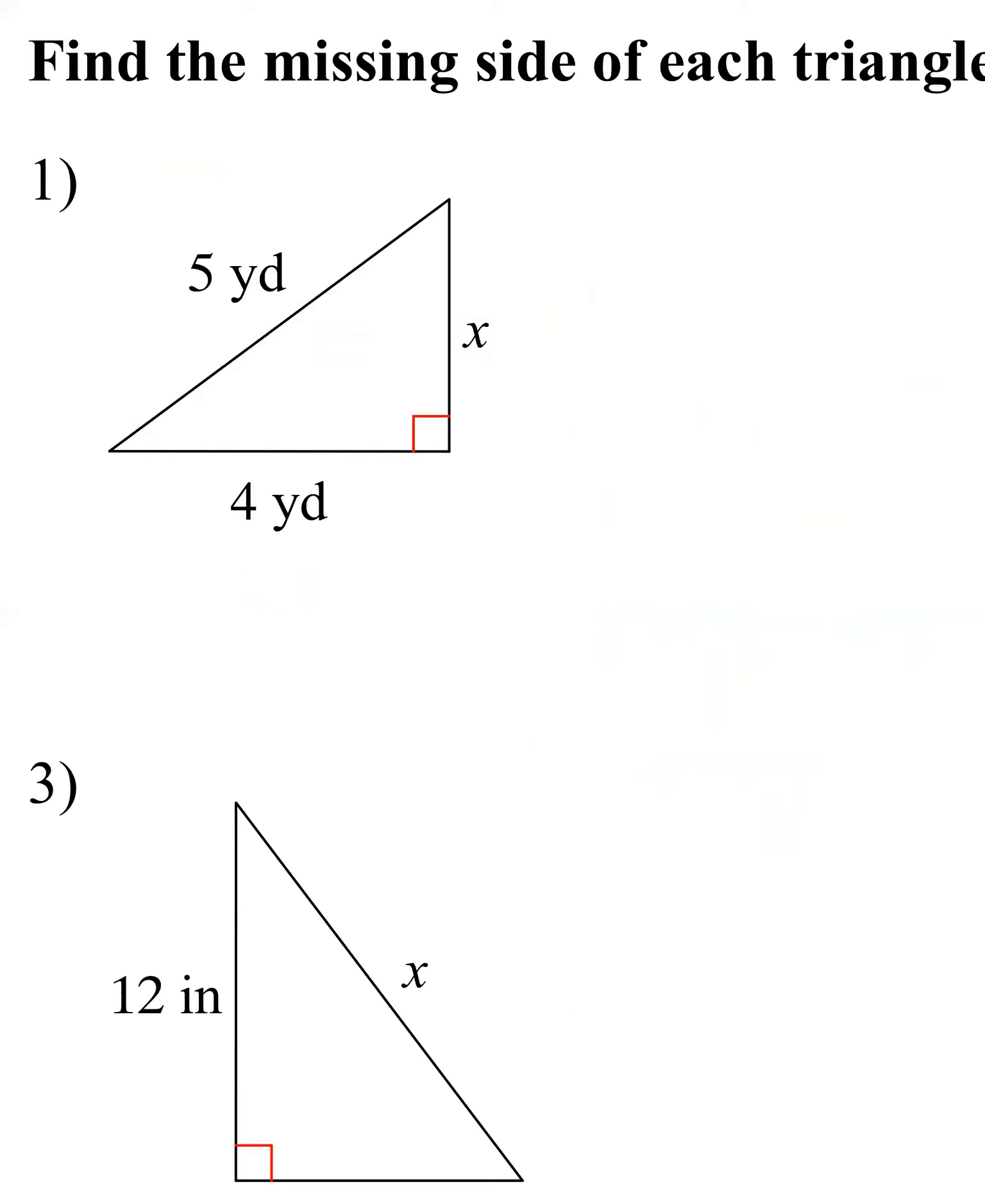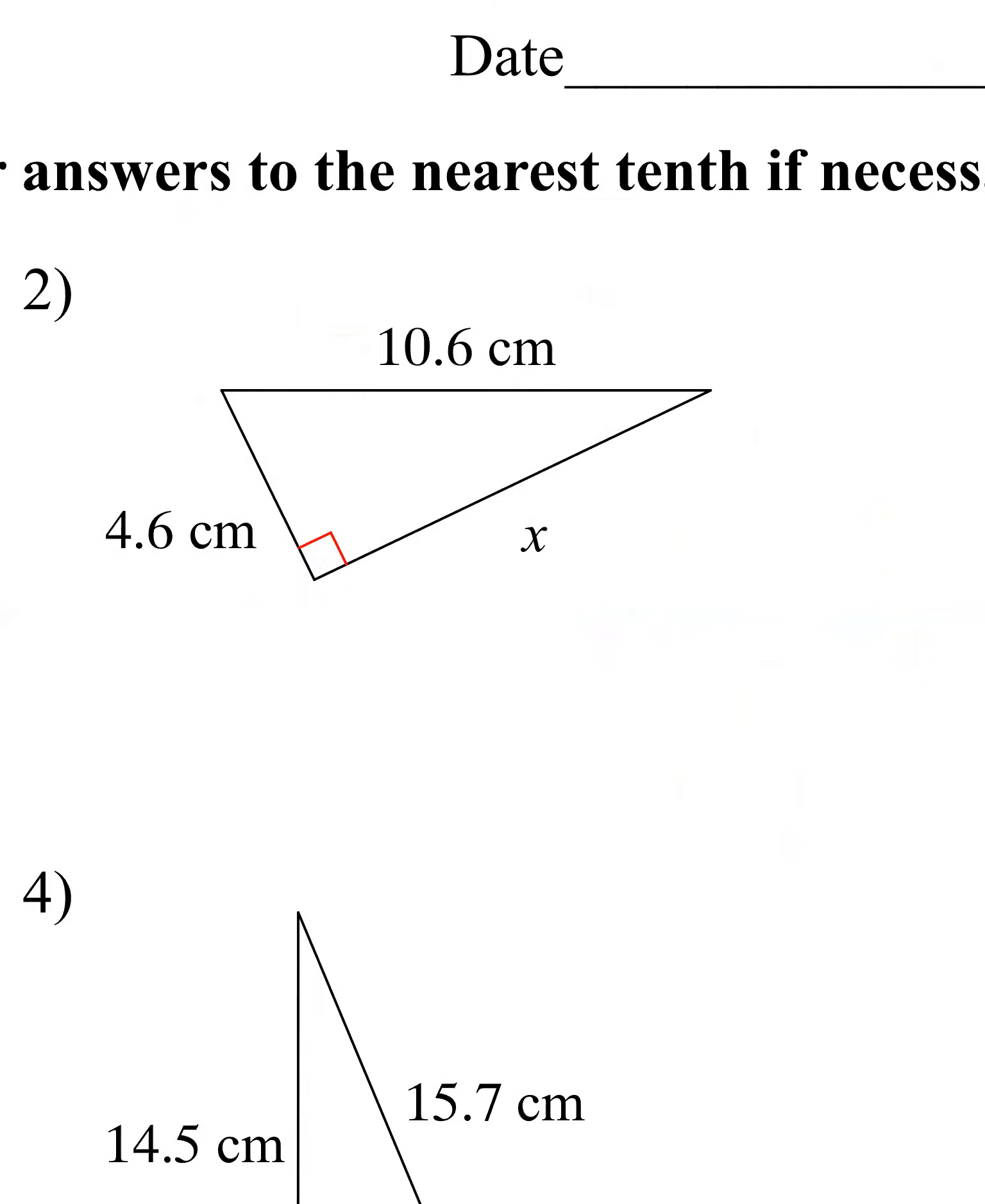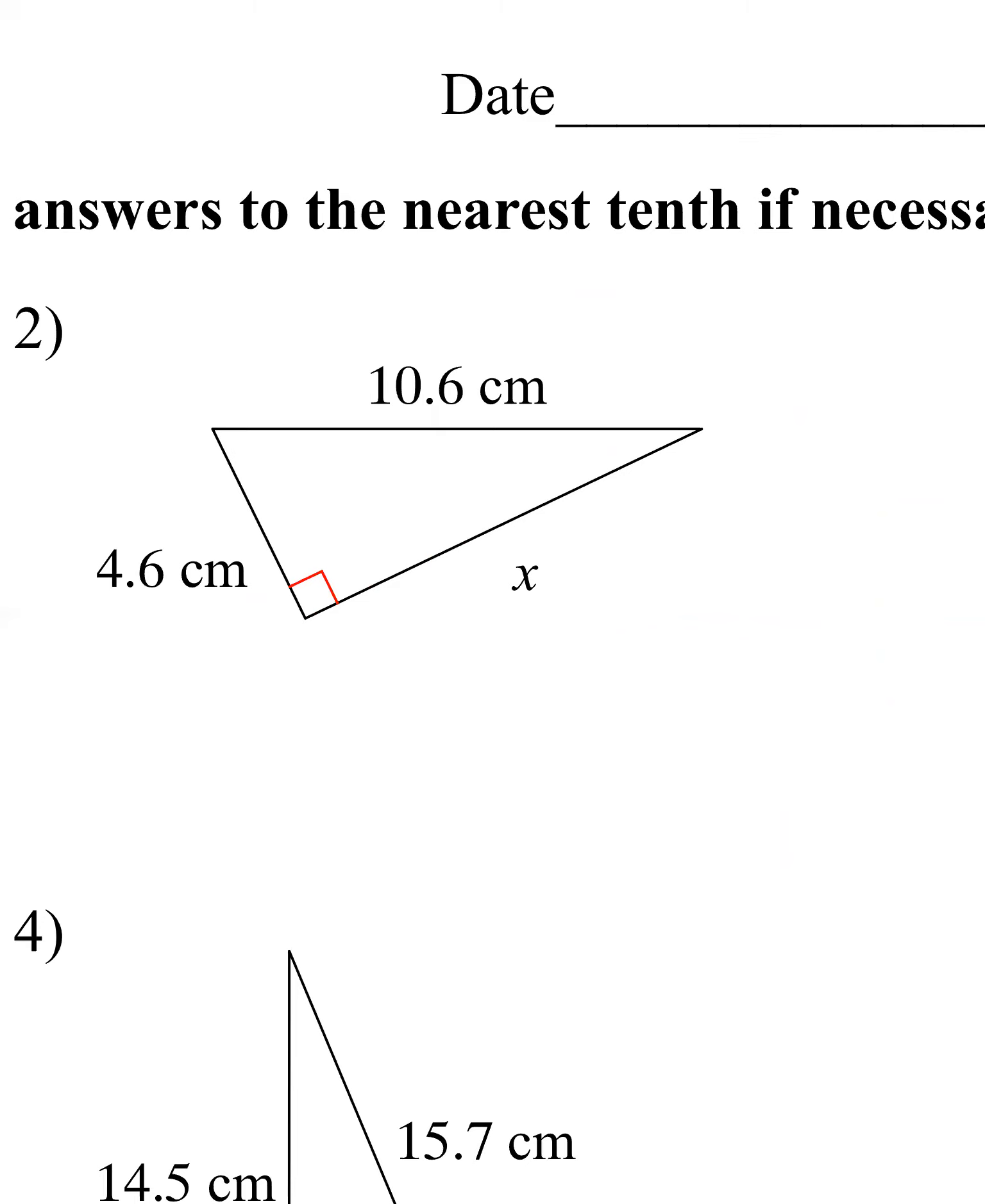Let's try the second one. Again, I'm going to start by labeling the three sides. Right across from that 90 degree angle has to be C. A and B you can put whichever one wherever you like. So let's do a² + b² = c². A this time is 4.6, gonna square that. B is the one I don't know, so I'll replace it with x. And C is 10.6.